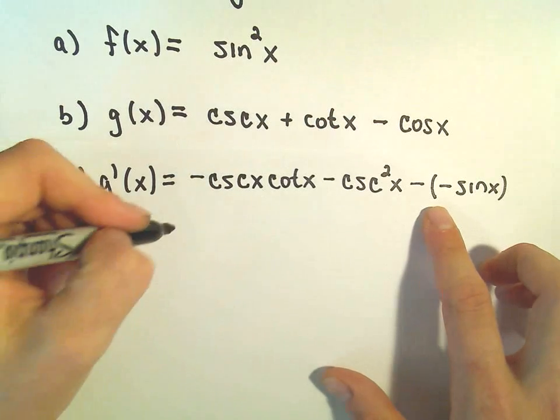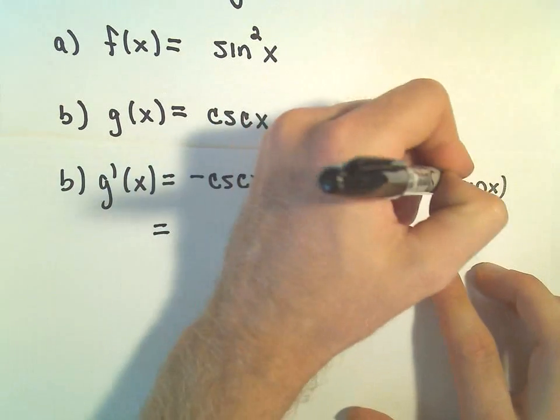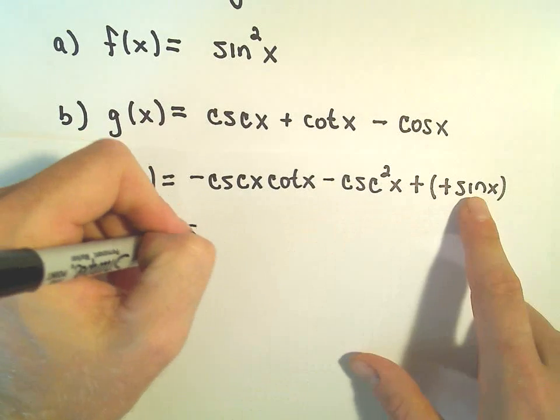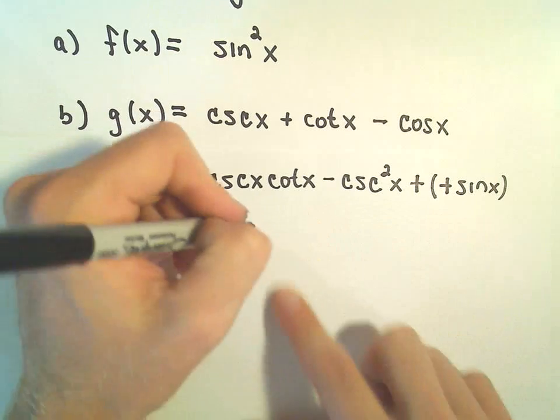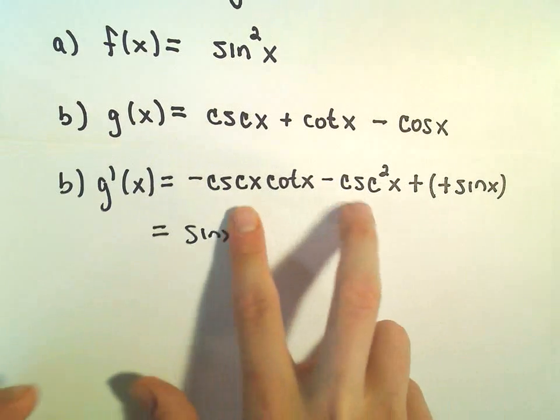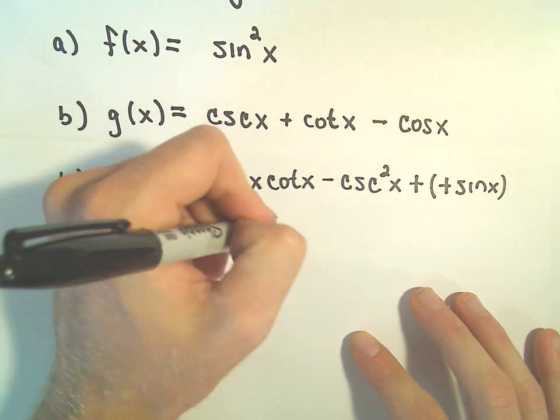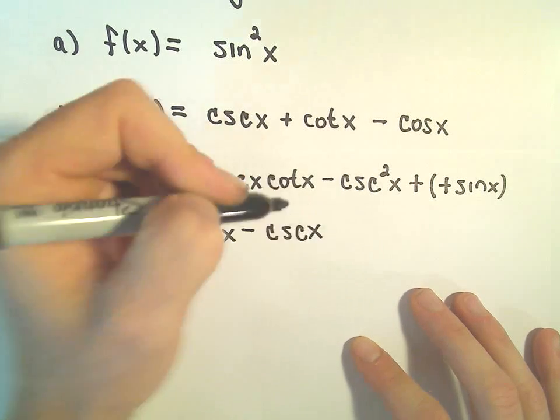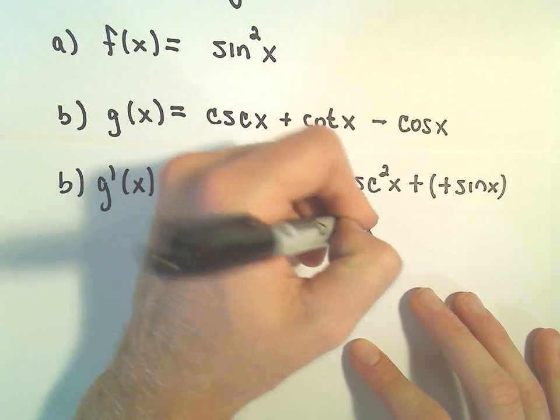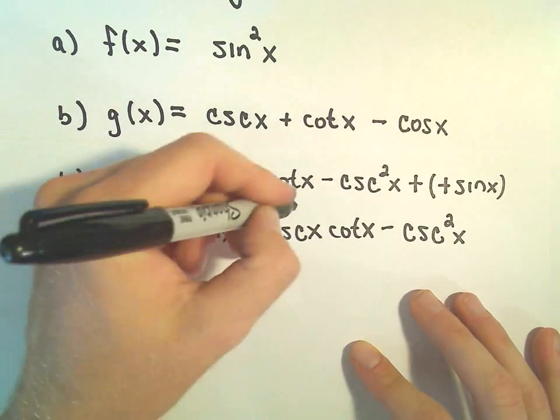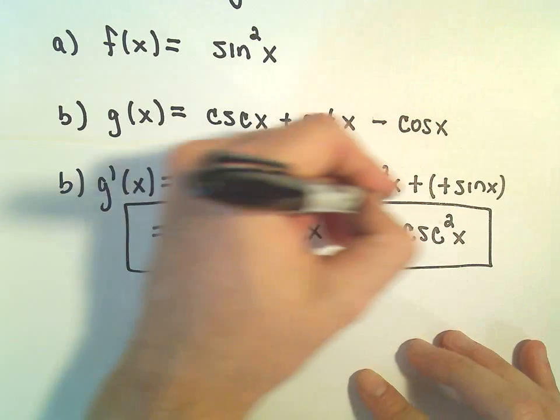And then the derivative of cosine is negative sine x. So really, the two negatives here will make a positive. Those will make a positive. And we could even write this, maybe. We could put the sine x all the way out front, and then you could factor a cosecant out of here. But I'm not going to do that. I'm just going to leave it alone. There's our derivative for part B.